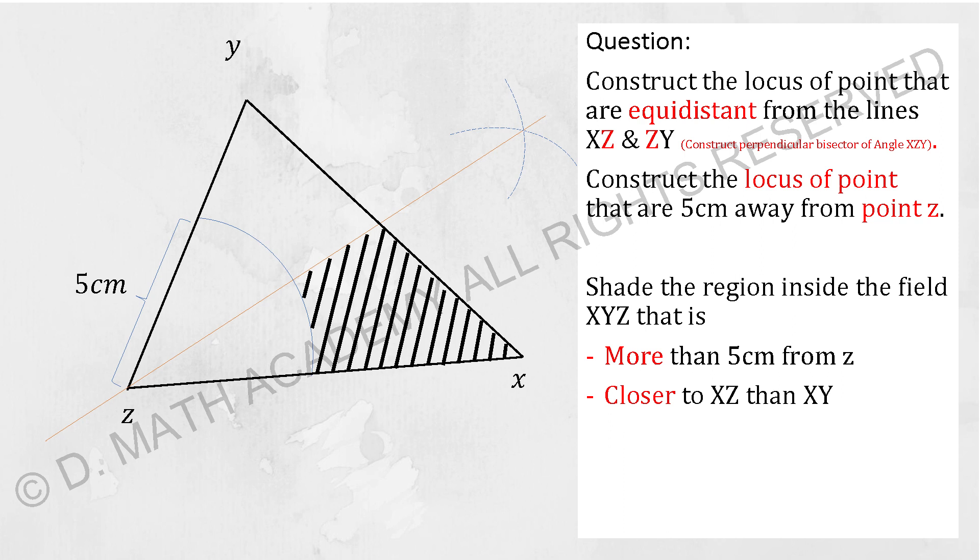Then extend it, draw another two points from the intersection point, then you will draw down the red line over there. This will make a perpendicular bisector or they mention about equidistance.